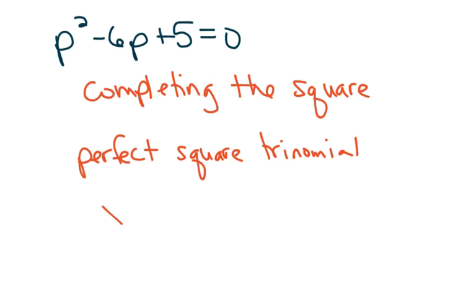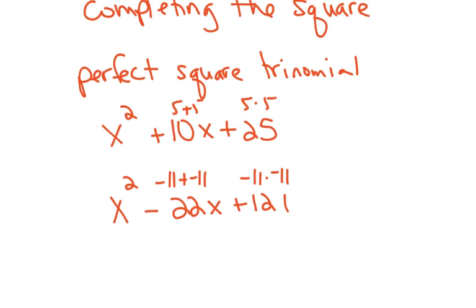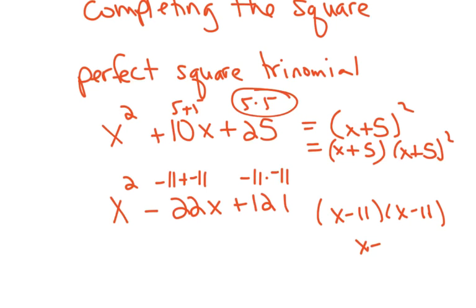Some examples are x squared plus 10x plus 25, because this is 5 times 5 and this is 5 plus 5. Or x squared minus 22x plus 121, because this is negative 11 times negative 11, and this is negative 11 plus negative 11. The reason for creating perfect square trinomials is that they're easy to factor. The first one factors into x plus 5 squared, and the second factors into x minus 11 squared.